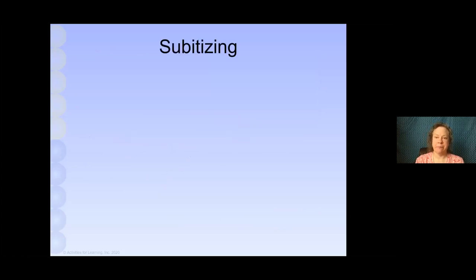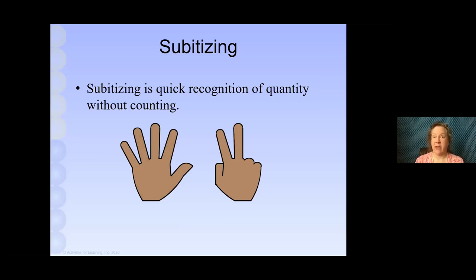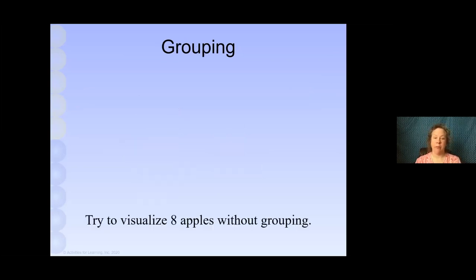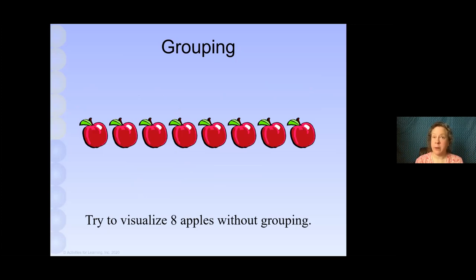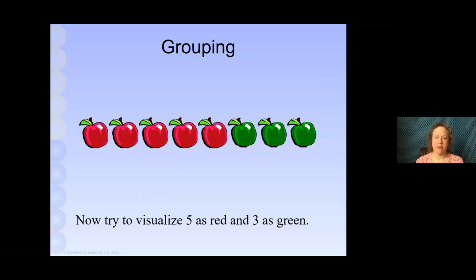Let's look at subitizing. Subitizing is the quick recognition of a quantity without counting. Tell me how many fingers you see here. It's three, right? Did you have to count it? No, not at all. You saw right away. That is subitizing. How about this time? Do you see seven? Did you have to count them? No. Try to visualize eight apples in a row lined up on your counter, no grouping. Can you picture those eight apples? It's pretty difficult to do. Now, try to visualize five as red and three as green. Is that a little bit easier? It should be. That's what that would look like.